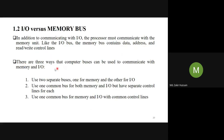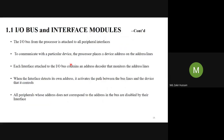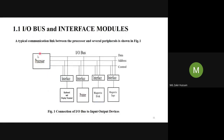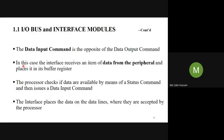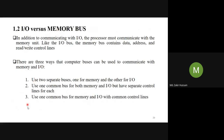There are three ways that computer buses can be used to communicate with memory and I/O. We are talking about buses, meaning we included both I/O and memory bus here. There are three ways that this processor should be able to communicate with the I/O bus and also with the memory bus. How is it going to do that? In three ways it is going to handle it.